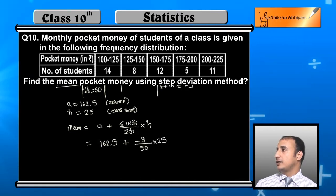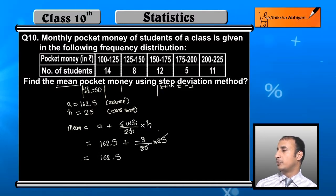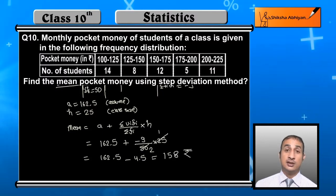Now 162.5 plus when I divide 25 by 50, that becomes 1 by 2, and 9 divided by 2 is 4.5 minus. So 162.5 minus 4.5 is 158 rupees. This is the mean.